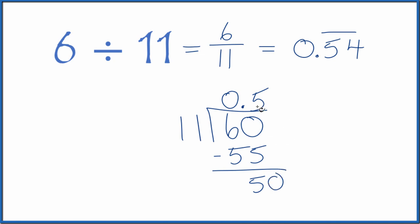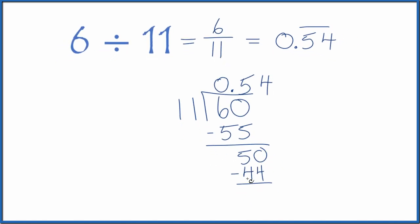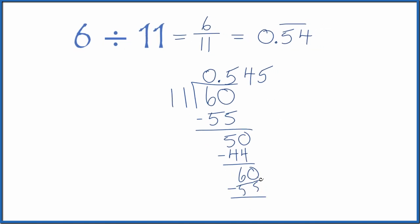11 doesn't go into 5, but we could call it 50 and move over 1. So 4 times 11, that's 44. We subtract and get 6. We could call this 60 and move over 1. Now 5 times 11 gives us 55. We subtract, we get 5. We could call that 50 and move over 1. 4 times 11...